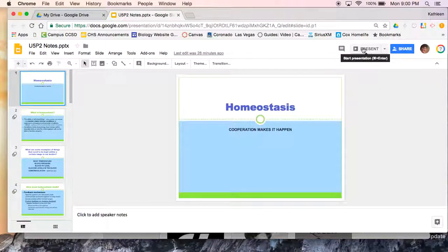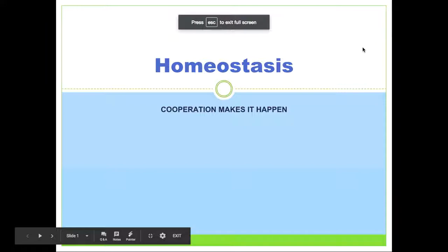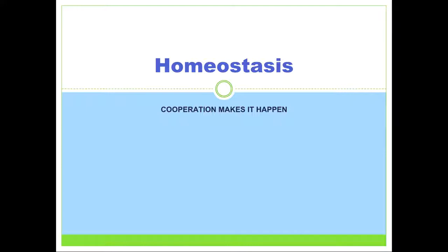Hello everyone. Let me get my presentation going. This is Ms. Merritt. I'm going to talk to you today about homeostasis at the organ level and the organ system level. By now, your teacher or I should have taught you about the cell membrane — how the cell at the cellular level maintains homeostasis — as well as the tissue level, how each tissue, a group of cells, works together to maintain homeostasis. And now we're looking at the organ and the organ system level.